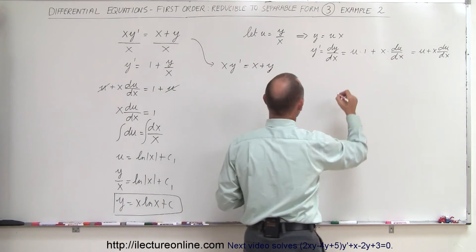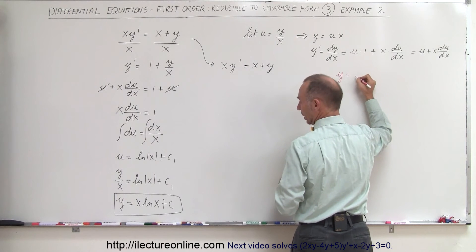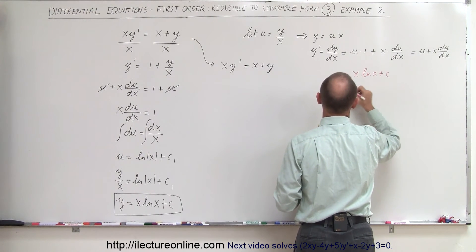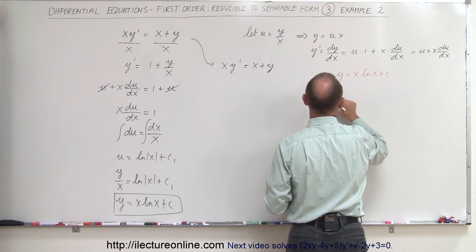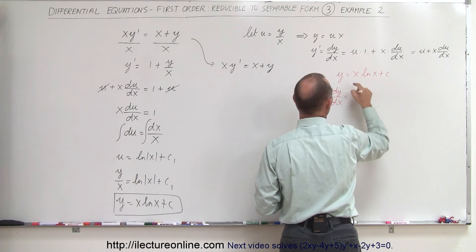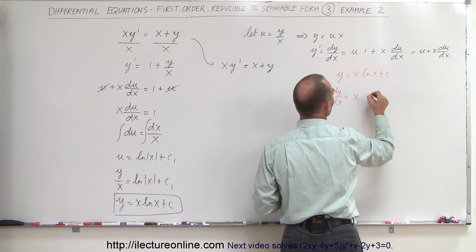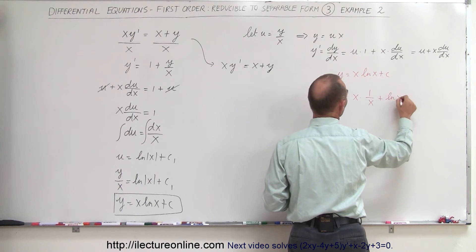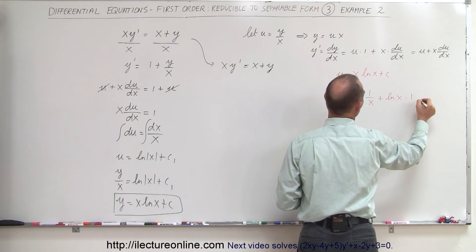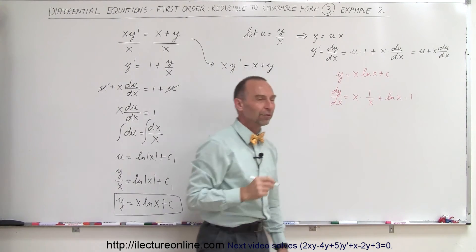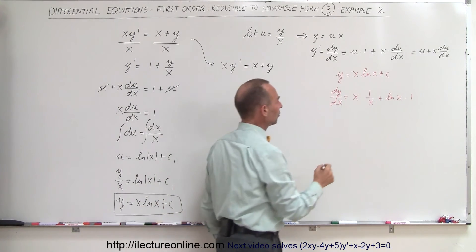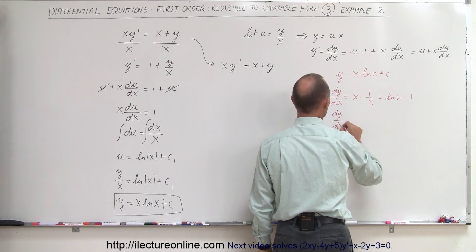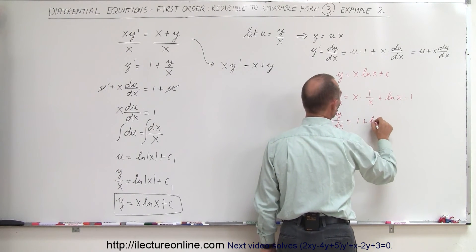If the solution is y equals x times the natural log of x plus a constant, then dy/dx equals the first times the derivative of the second, which is 1 over x, plus the second — the natural log of x — times the derivative of the first, which is 1. The derivative of a constant is 0, so dy/dx simplifies to 1 plus the natural log of x.